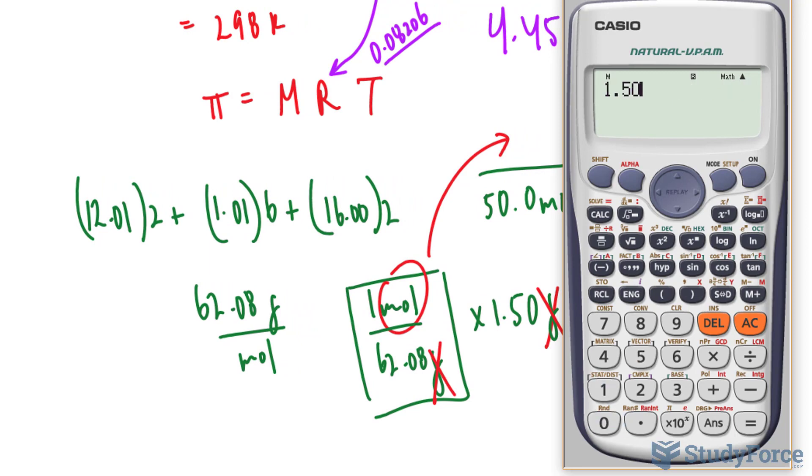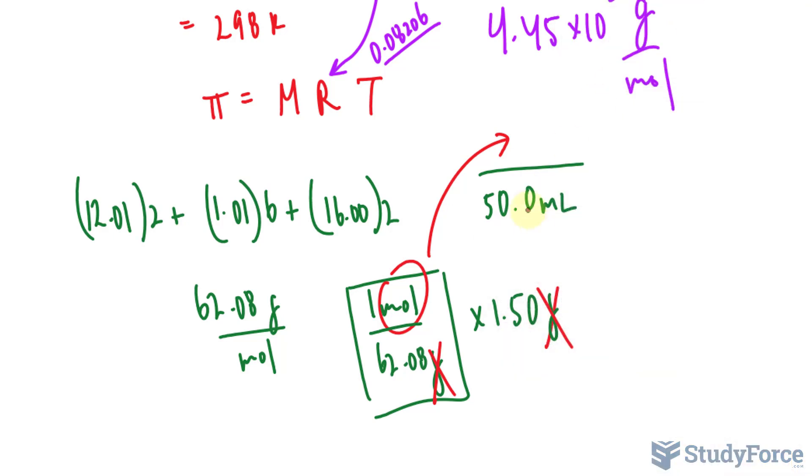And that can be then placed into there. Let's go ahead and do that. 1.50 divided by 62.08, and this gives us roughly 0.0241. I'm not going to record that number just yet, because remember, I need to divide it by 50.0 milliliters, and that needs to be changed into liters,